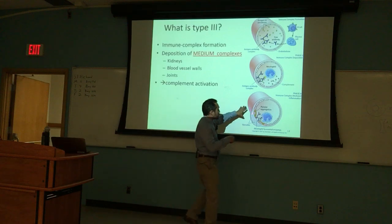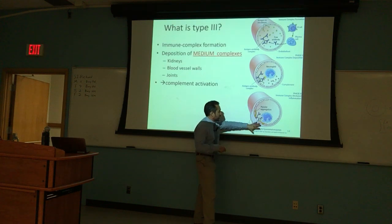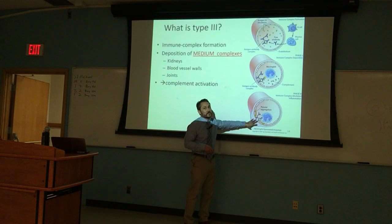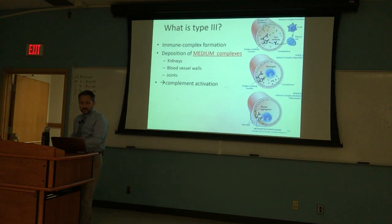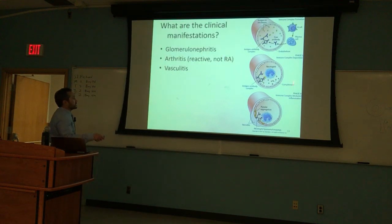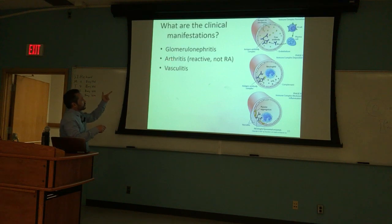This is chronic inflammation — it doesn't just come up and go away, so you get a lot of scarring and fibrosis that persists for a long time. We also see this at the level of the kidney — called glomerulonephritis — and within the joint space, called reactive arthritis, not to be confused with rheumatoid arthritis, which we'll get into on Wednesday.